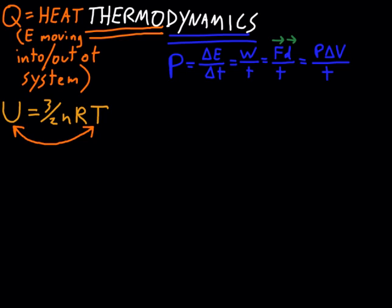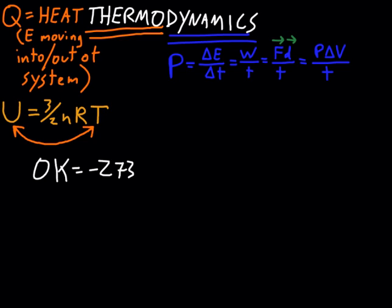A nice way to think about this is to consider zero degrees Kelvin, defined as absolute zero — that's negative 273 Celsius — the temperature at which all random atomic motion stops; atoms become perfectly still. At zero degrees Kelvin, if the temperature equals zero, the internal energy also equals zero with absolutely no movement whatsoever. As you start adding more heat and raising the temperature, atoms start moving, vibrating, and bouncing around more, until at high enough temperatures things move like we normally see atoms moving.